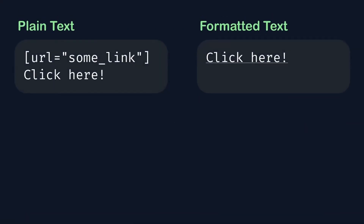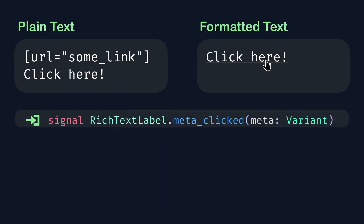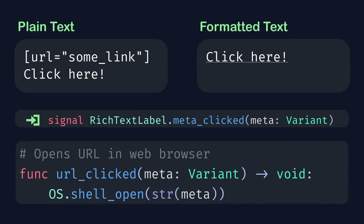You can also include URLs in your text, but they might not work the exact way you'd expect. Instead of opening the link in your web browser when you click the link, it calls a signal on the rich text label. You can choose to handle the signal however you'd like. If you want it to work like a normal link you can do that, but you can also just use it like a regular button if that's something you wanted to do.